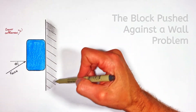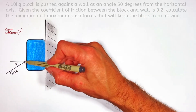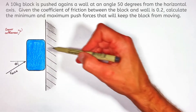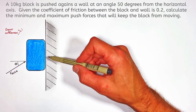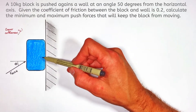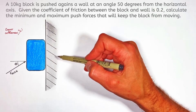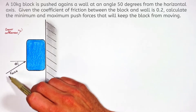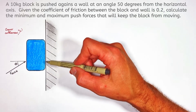We've got a block being pressed up against a wall by a push force acting at some angle theta relative to the horizontal axis. Between the block and the wall there's some coefficient of friction mu, but friction can act in either direction on the block depending on which way the block is trying to slide along the wall. In this problem we're going to solve for the maximum and minimum values of this push force that will allow the block to stay at rest.